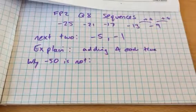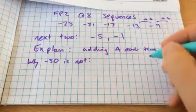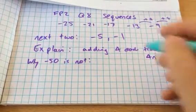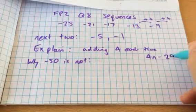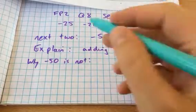Or if you wanted to, you could find out the nth term. We know that it's going up in 4s, so it's 4n, but that first term is going to be minus 25, so 4 minus 29 would give us minus 25.